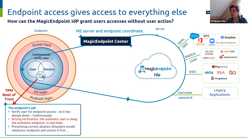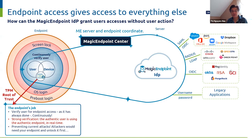The endpoint will continue to verify the user accessing it — that's what the endpoint has been doing forever. Now it continuously verifies that. Like usual, if the user doesn't use the endpoint for a while, it puts up the screen lock. If more is needed, technology today allows the endpoint to check user phone proximity and then check user face ID and so on.